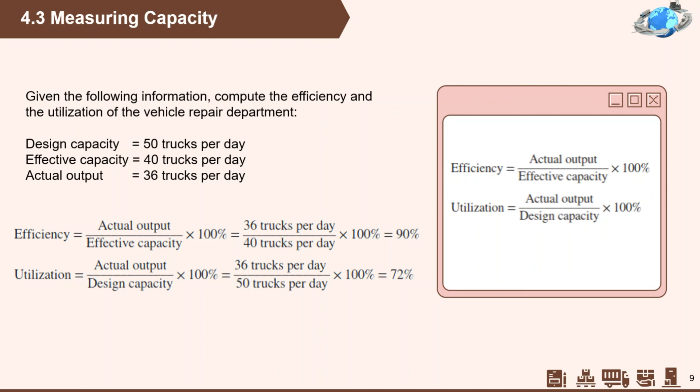We have an example problem here. The given design capacity is 50 trucks per day. Effective capacity is 50 trucks minus 10 — let's say due to one staff being newly hired — so effective capacity is 40 trucks. Actual output is 36 trucks per day. Based on the computation using the given formula, efficiency is 90% and utilization is 72%.